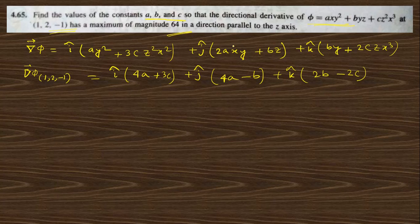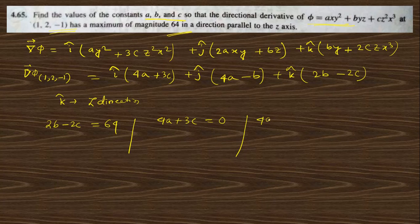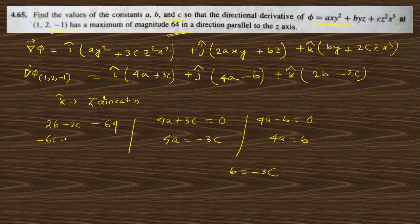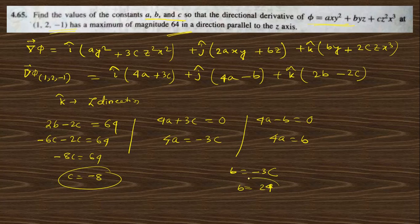The maximum is in the z-direction, so dotting with k-cap: 2b - 2c = 64, and the other components must be zero: 4c = 0 giving c = 0 doesn't hold... From the system: 4a + 3c = 0, 4a - b = 0, and 2b - 2c = 64. From these: b = -3c, then substituting: -6c - 2c = 64, so -8c = 64, c = -8. Then b = 24 and a = -3c/4 = 6. So a = 6, b = 24, c = -8.